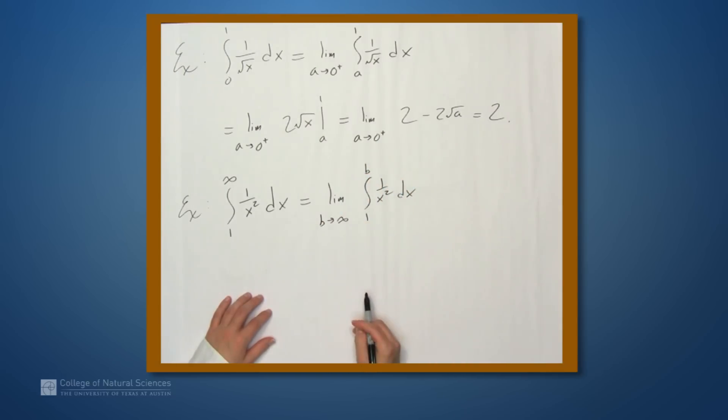So if we take the limit as b approaches infinity of the integral from 1 to b of 1 over x squared dx, well, this is something we can figure out. And this is how we define an improper integral that is improper because one of the limits of integration is either infinity or negative infinity.